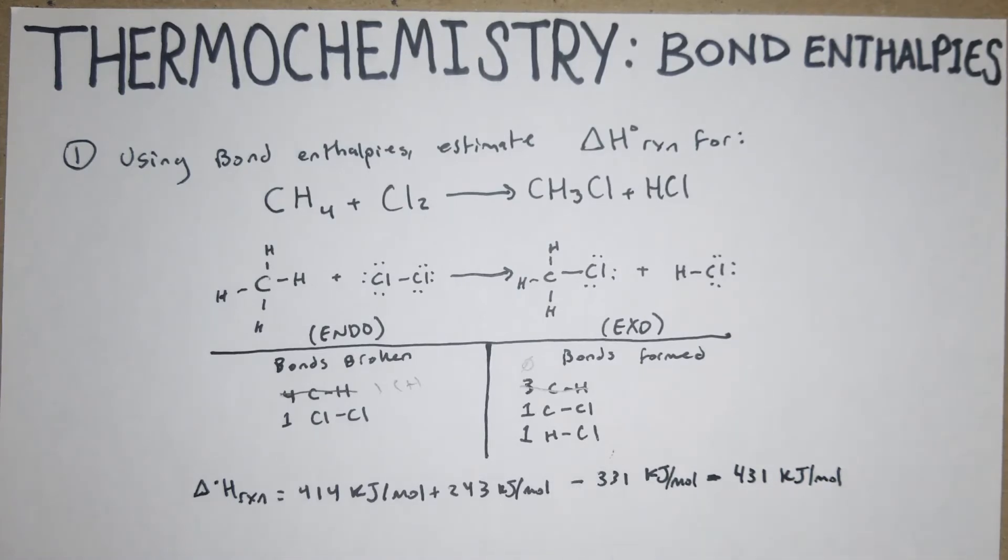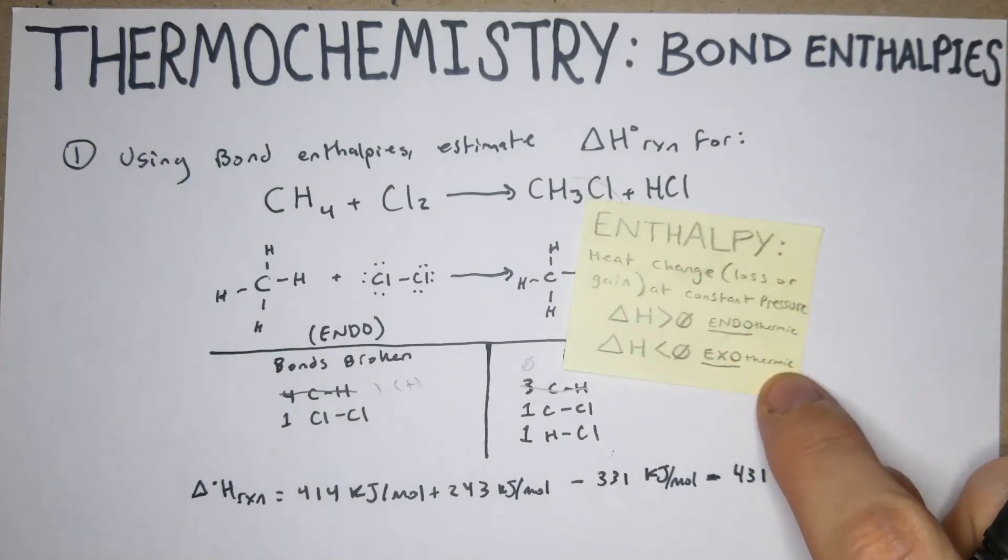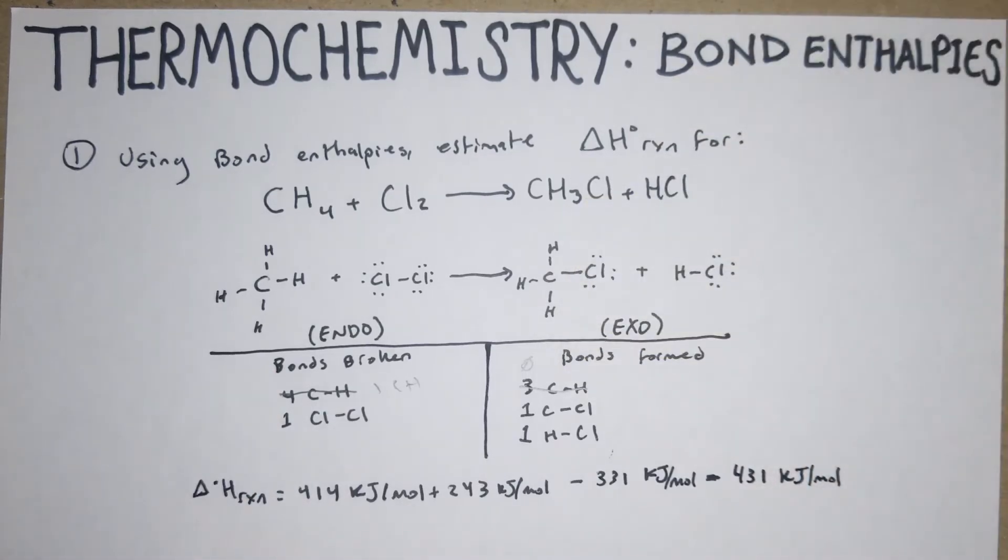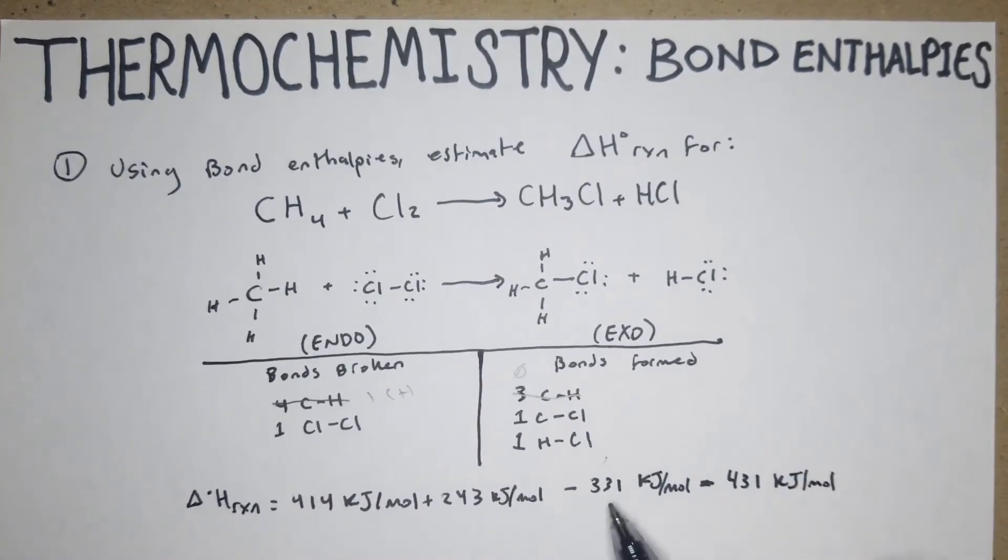If the delta H is greater than one it's endothermic, so breaking bonds is endothermic and forming bonds is exothermic. So it's going to be minus everything that is on this side. That's basically all there is to these. From there it's simple math. And the answer is that the reaction is exothermic.